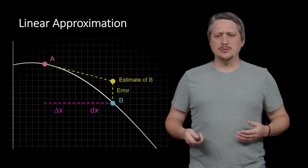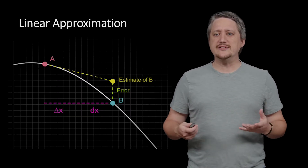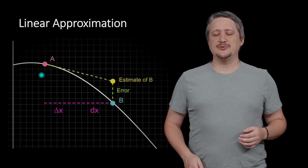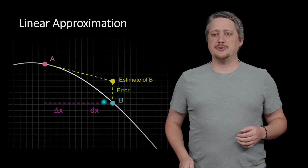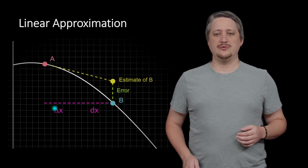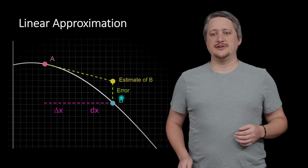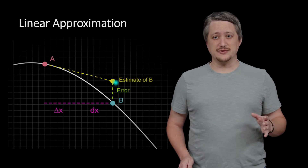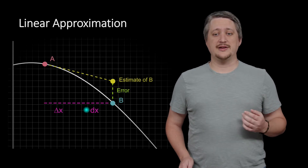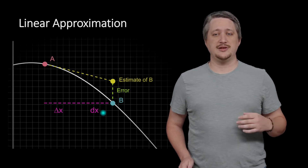If you remember when we talked about this before, we had a picture where A was the part that was easy to calculate and B was the part that was hard to calculate, and we went through this estimate. So in our example, 9 is that A, our B is going to be 10, our estimate is going to be some value that's close but has some level of error, and since we're going from 9 to 10, our delta x is going to be 1.